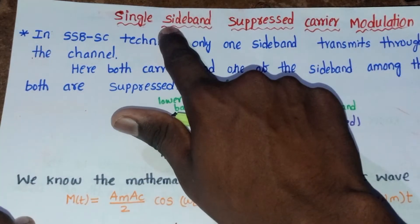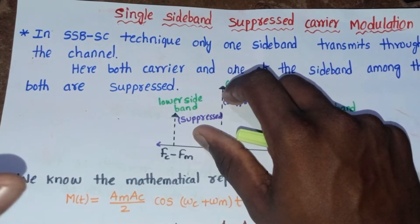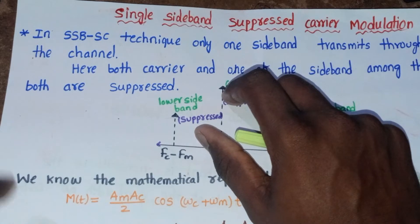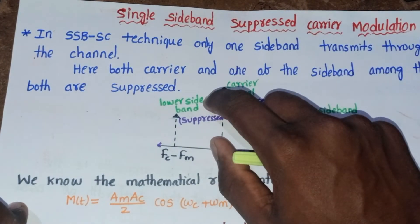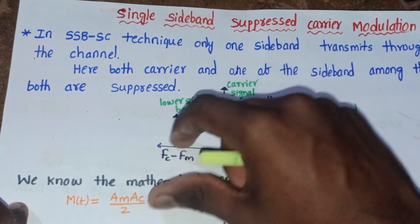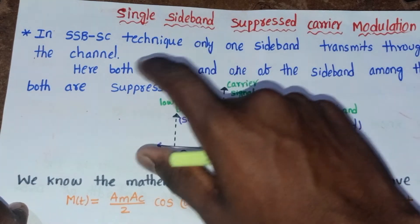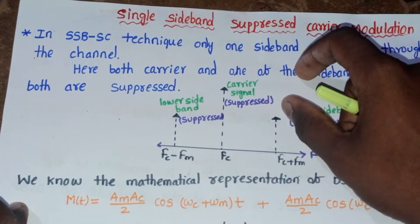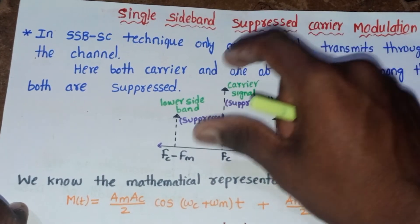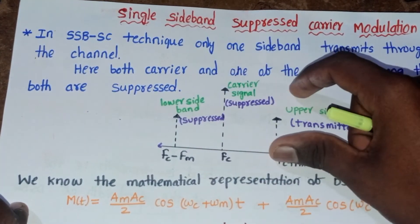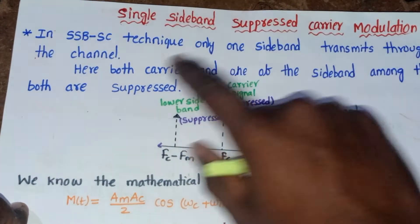In standard AM modulation, we have two sidebands and one carrier. In DSB-SC modulation, we suppress the carrier. Whereas in SSB-SC modulation, we suppress the carrier as well as one of the sidebands — that is nothing but Single Sideband Suppressed Carrier. Here, only one sideband is transmitted through the channel, and both the carrier and one sideband are suppressed.